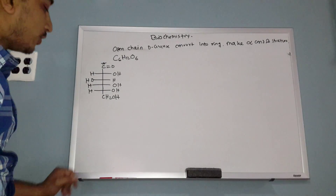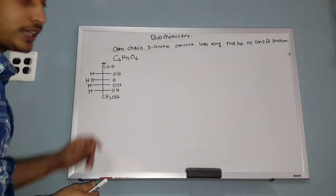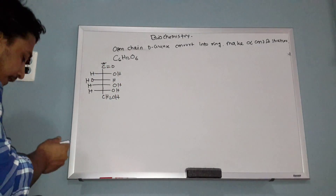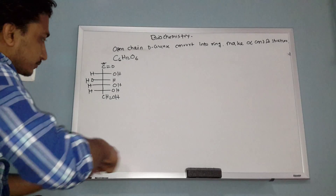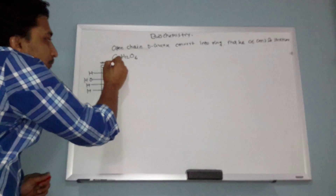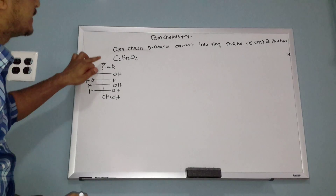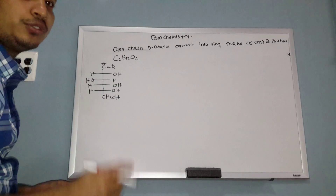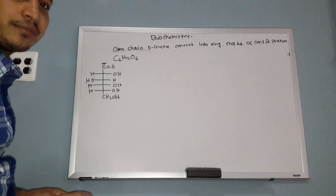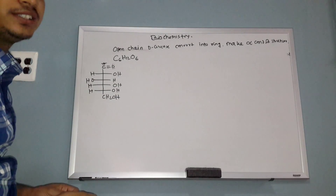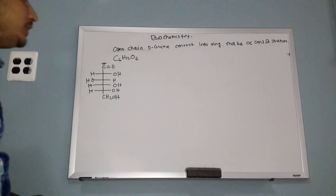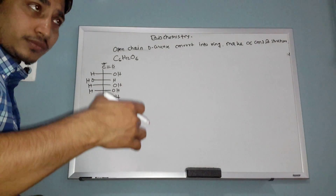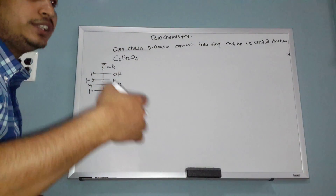Carbon number one is an aldehyde. Why? Because it has a carbon double bond to oxygen — a C=O — and that carbon is connected to a hydrogen instead of another carbon. So this makes it an aldehyde.